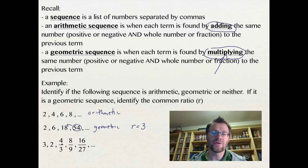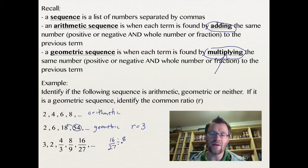And finally, 3, 2, 4 thirds, 8 ninths, 16 27ths. This one might be a little bit harder to tell right off the bat, but it is geometric. And so we will take any of these terms, so like 16 over 27, and we're going to divide it by the previous term. That would be 8 ninths.